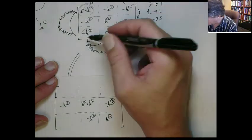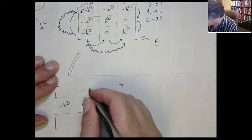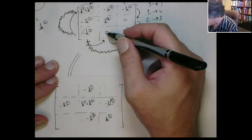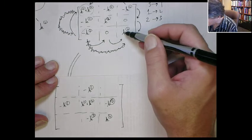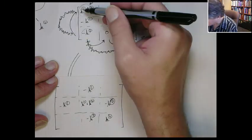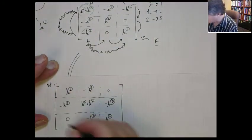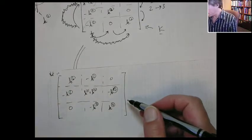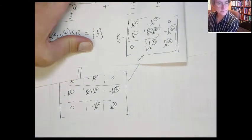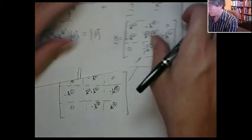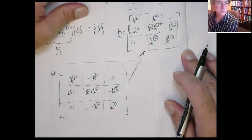That's a zero. Now this one goes to second column, first row, so I get the minus K1 here. That's a zero. And finally this one goes to first row, first column — zero, zero, zero. And here you can see that this gives you the same result as the original numbering. That gives you the same ordering, so you get the same result.